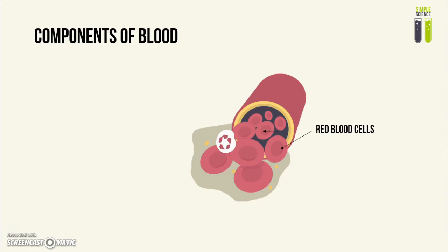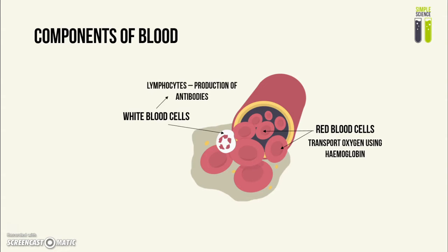First of all we have the red blood cells, and these will transfer oxygen using the hemoglobin in them. Then we have the white blood cells which are involved in the body's immune response. There are two types of white blood cells: lymphocytes, which are involved in the production of antibodies, and phagocytes, which are involved in phagocytosis. These two processes will be explained in further depth in the topic of immunity.